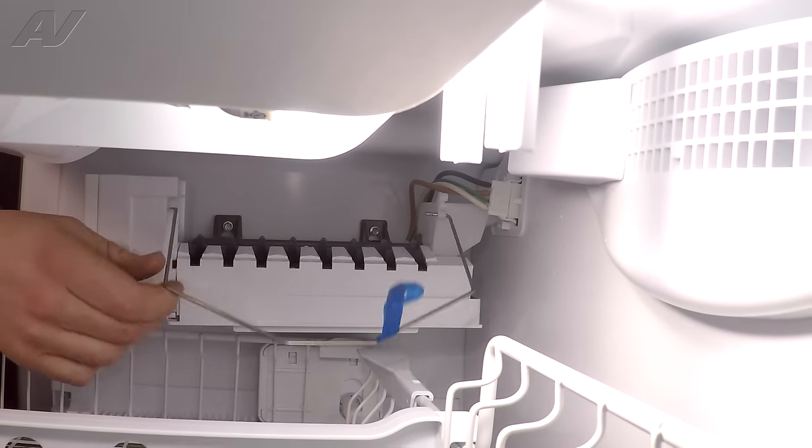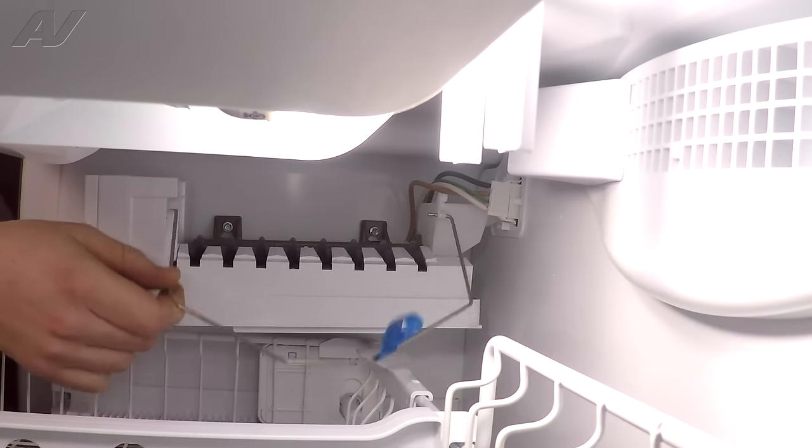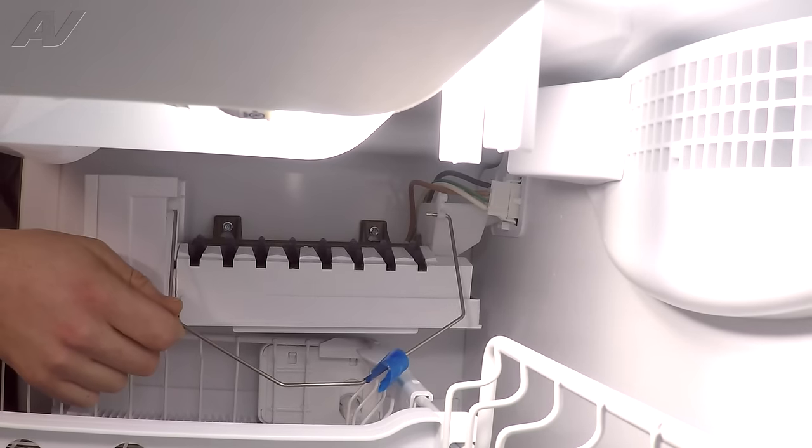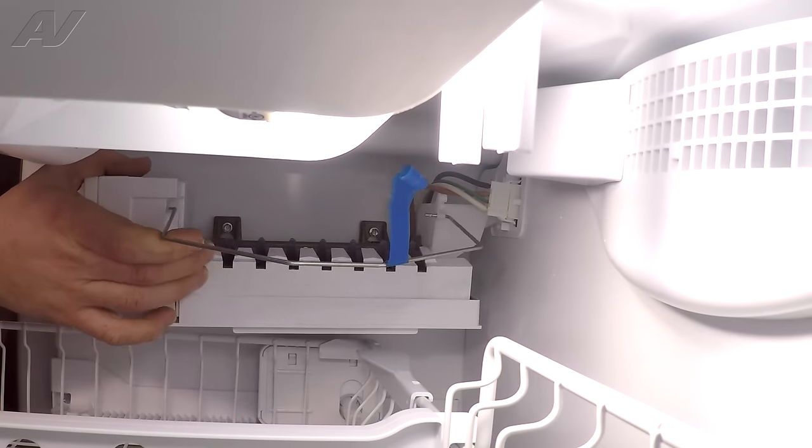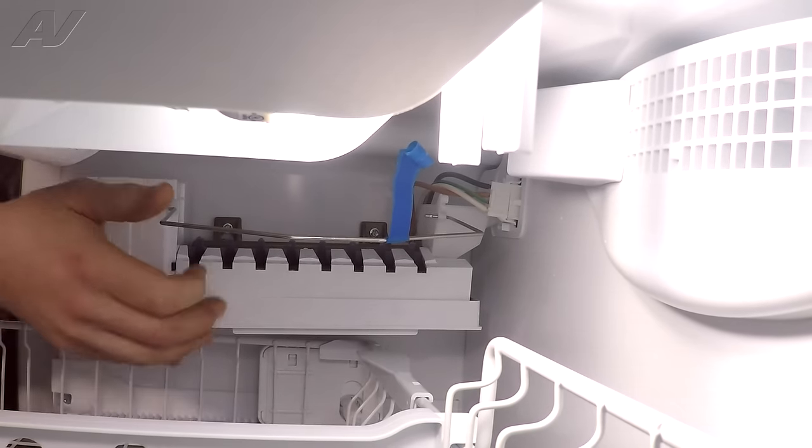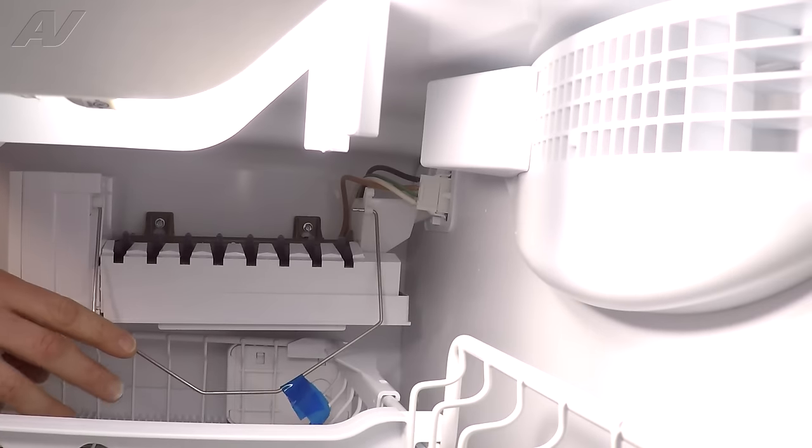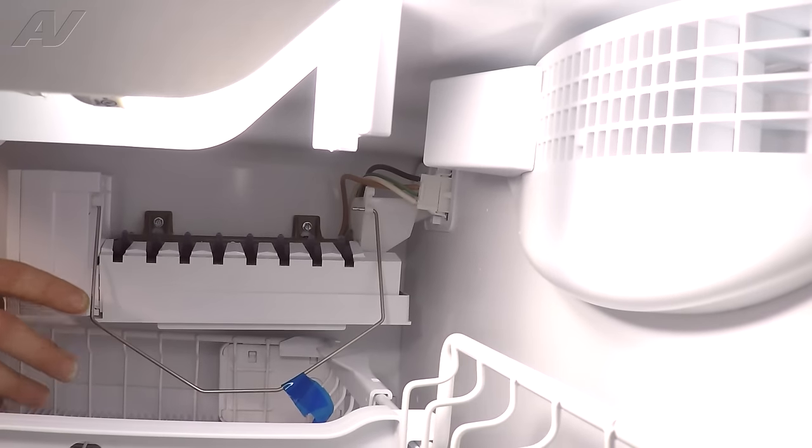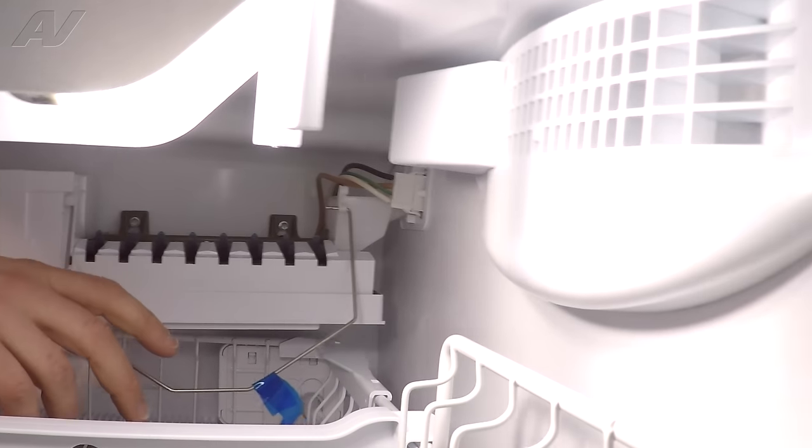Next you want to take a look at the ice maker itself. We have the ice maker arm here and you want to make sure it's in the on position and that somebody didn't turn it off. This here would be the off position for the ice maker to manually shut it off. The arm as it was down is in the on position, so that's all good there.